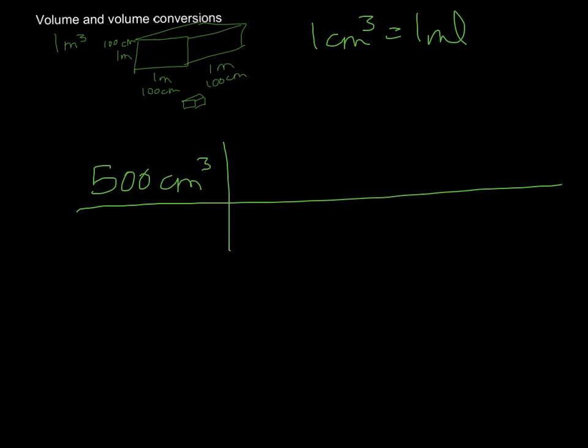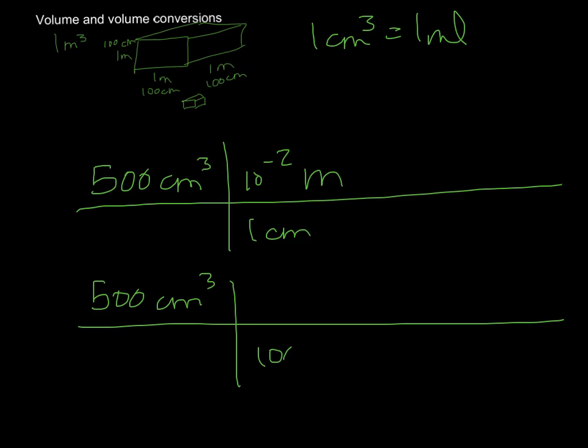Now, when we do this conversion, we know that 1 centimeter is 10 to the minus 2 meters. Because, centi, remember, means 10 to the minus 2. Or, you could have written this, because this is the way more of us are comfortable. There are 100 centimeters in 1 meter. So, you can either use the metric prefix, or you can use this, which is what we're more comfortable with. For consistency's sake, using the metric prefixes, I'm going to go ahead and go with the top way of doing it. Do we have cubic meters? The answer is no. You've only canceled out one of those centimeters.